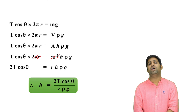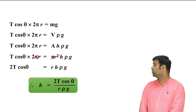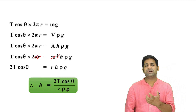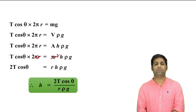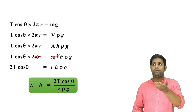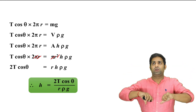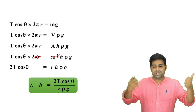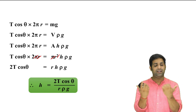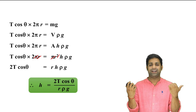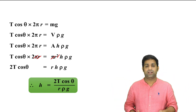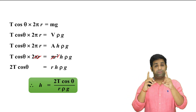Once you understand this concept, the derivation is clear. When the liquid rises, it pulls the wall — that is the action. T is resolved: T cos theta is the upward component and T sin theta is the horizontal component. All T sin theta components cancel. T cos theta acts over the whole circumference, giving the total upward force T cos theta into 2π.